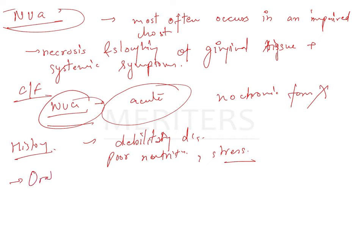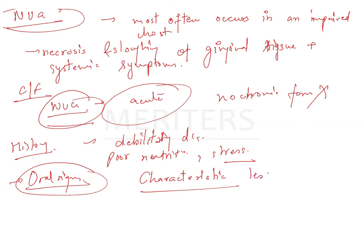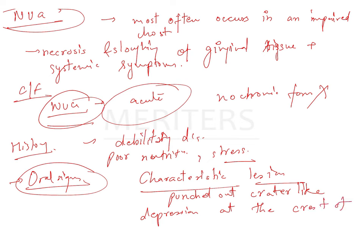The oral signs are a very important and frequently examined part. The characteristic lesions are punched-out, crater-like depressions at the crest of interdental papillae. These subsequently extend to the marginal gingiva and the remainder of the oral mucosa.